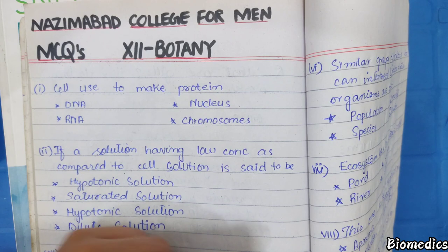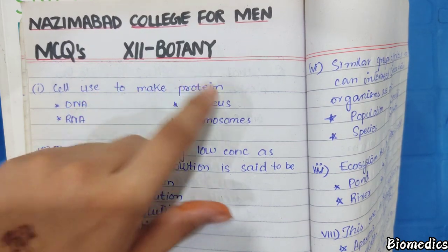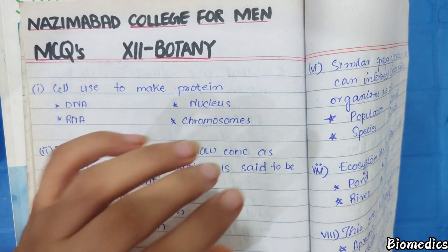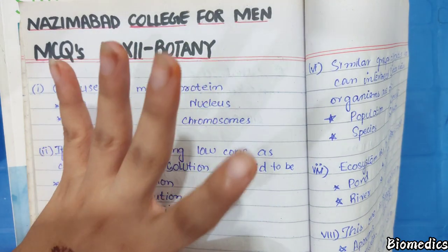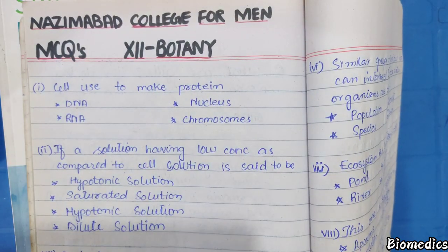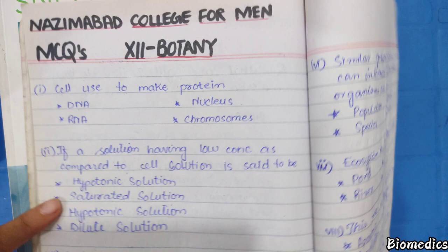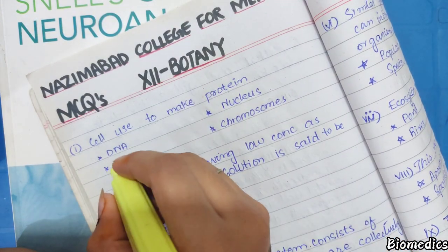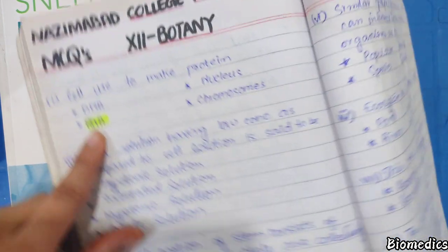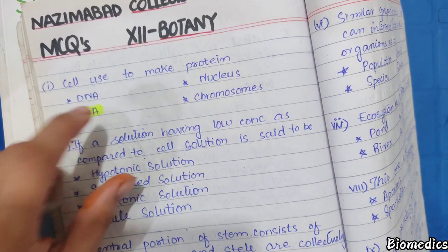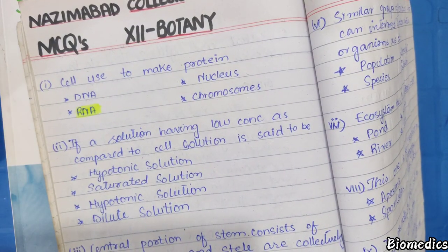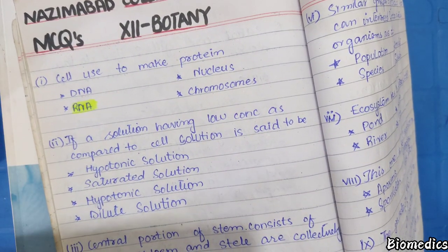MCQ: Which cells are used to make protein? You should remember that protein synthesis involves RNA. The full form is ribonucleic acid. Through transcription and translation, RNA is made and used for protein synthesis.